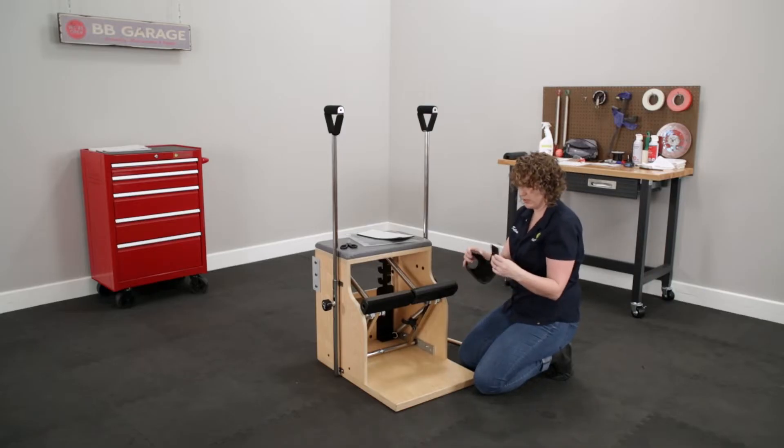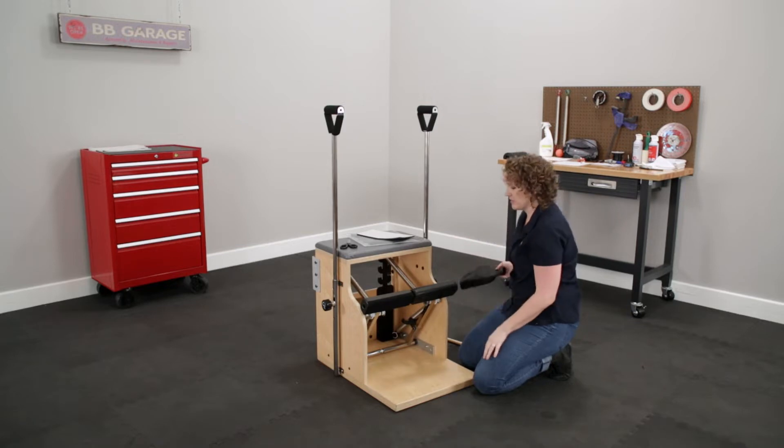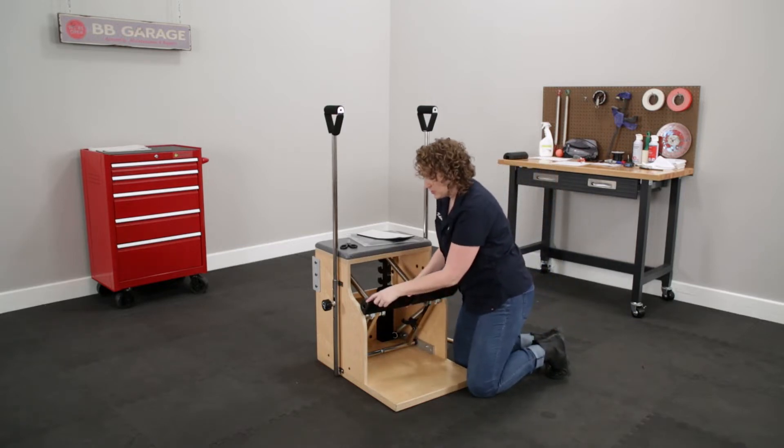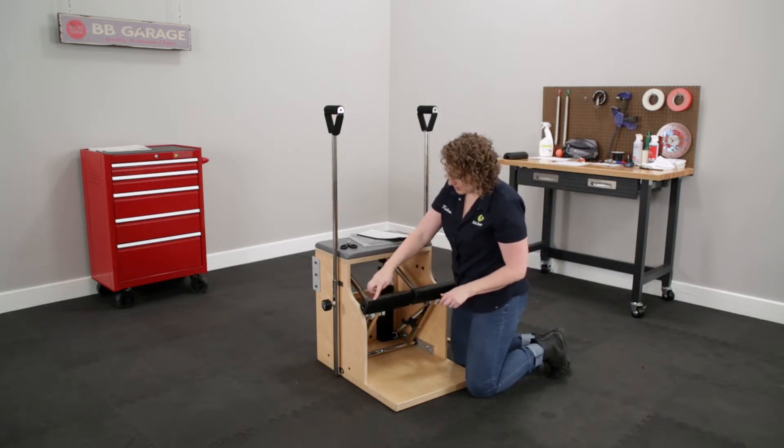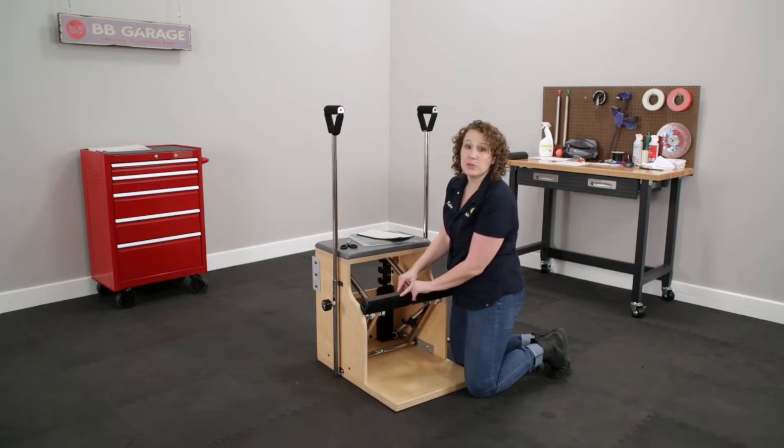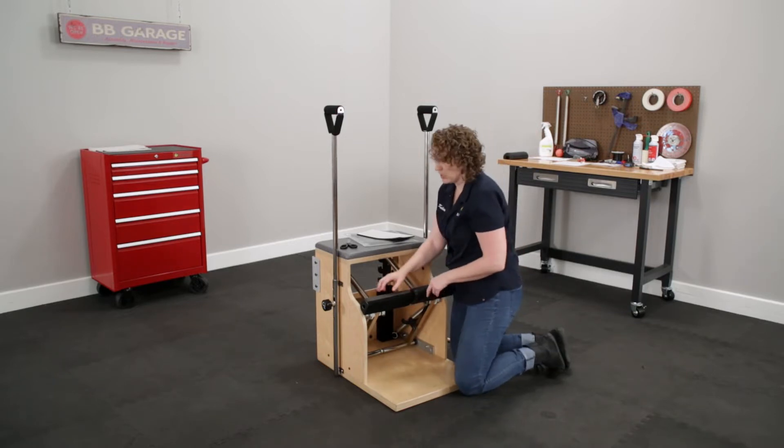There we go, so here's our old cover, we can put this off to the side. You can see under here that there is this neoprene pad right next to the velcro, so let's go ahead and try and remove the neoprene.